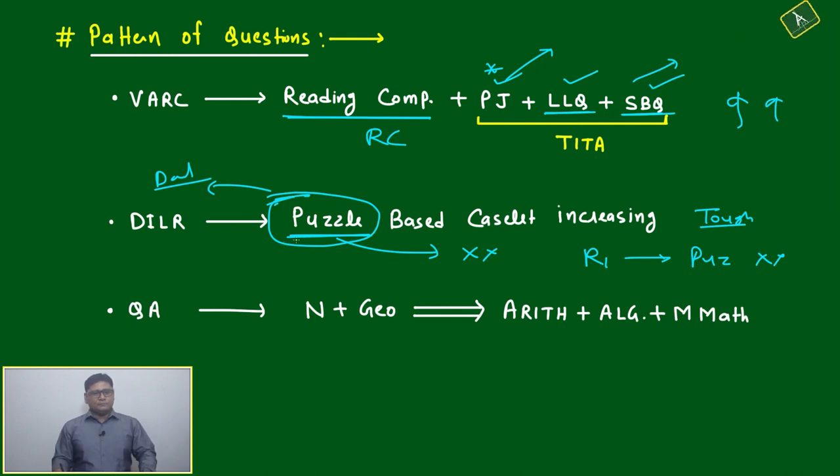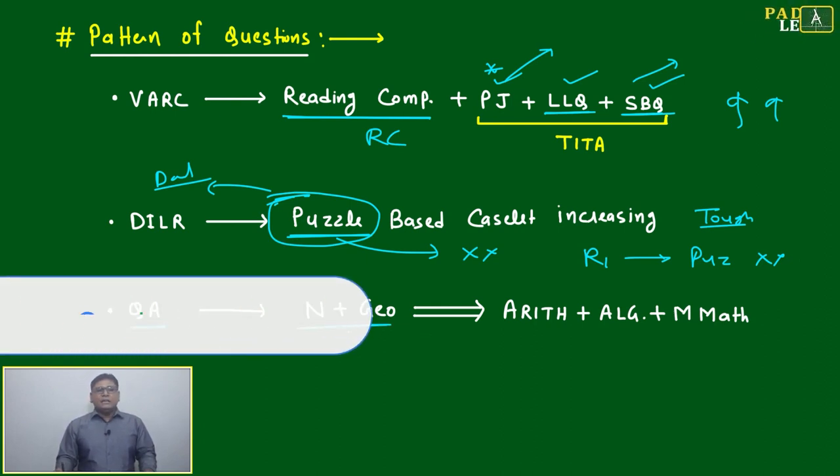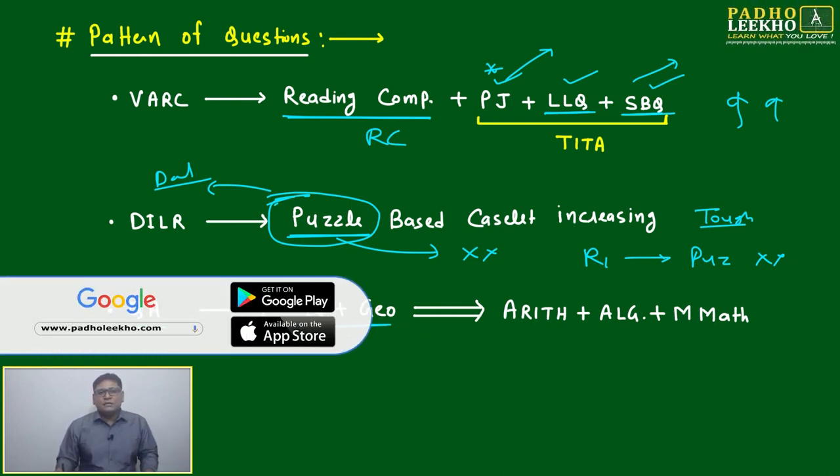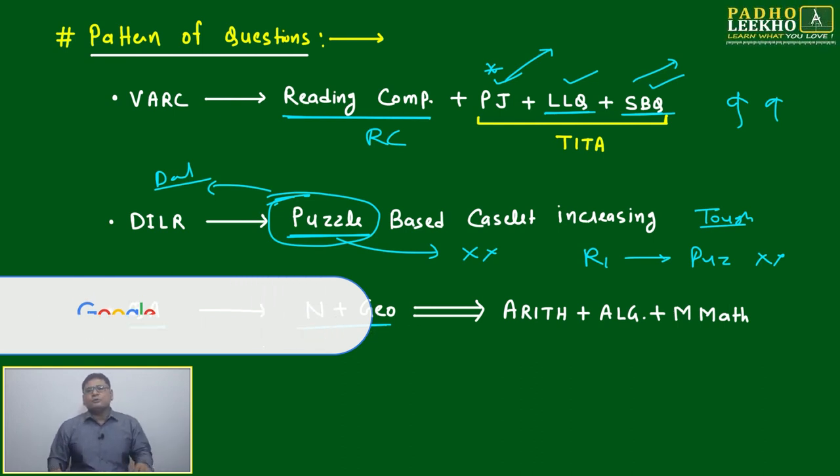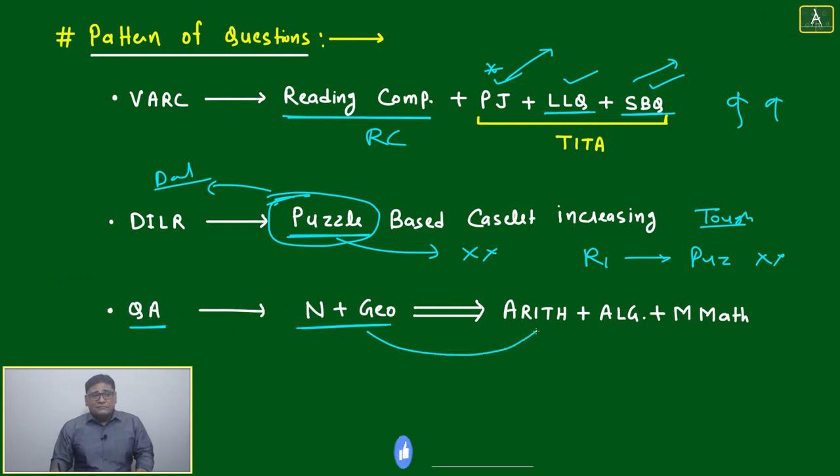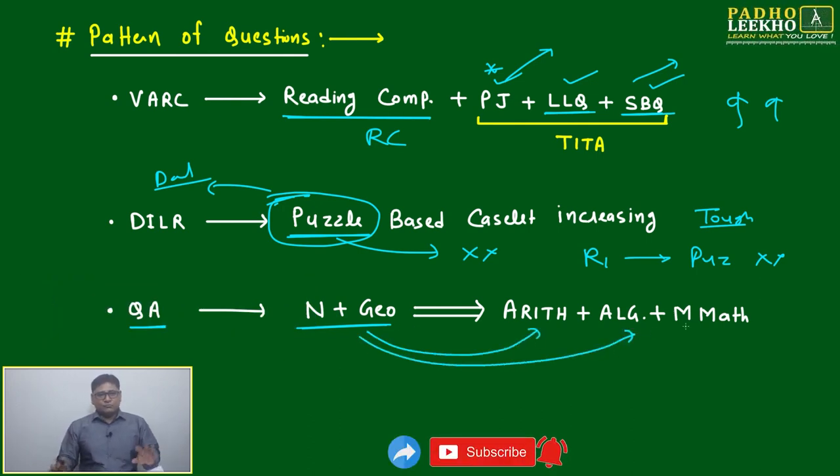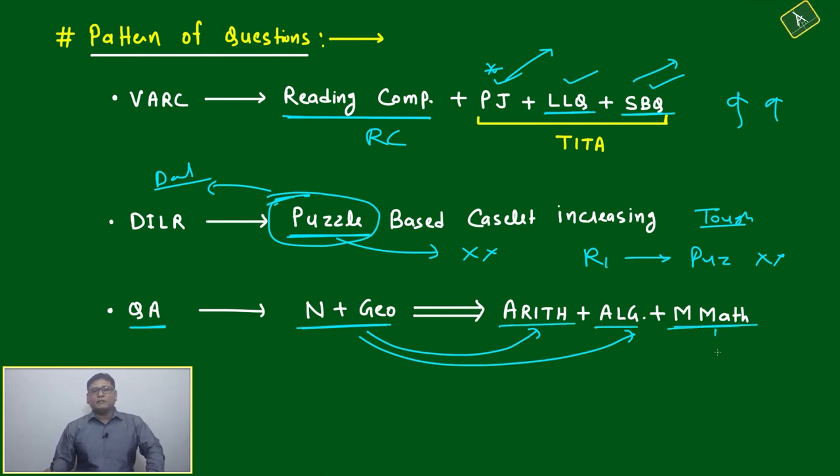In QA, another shift is happening. Earlier, Number and Geometry questions had more emphasis and more questions. Now it is shifting toward Arithmetic, Algebra, and Modern Math. Modern Math is an open-ended category—whatever we cannot categorize in Number, Geometry, Arithmetic, or Algebra, we call Modern Math.